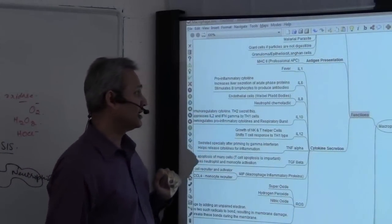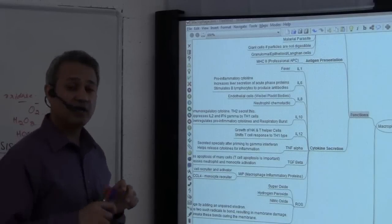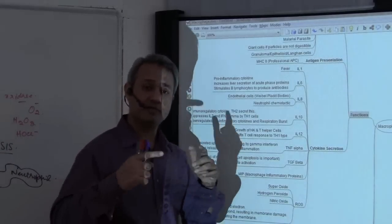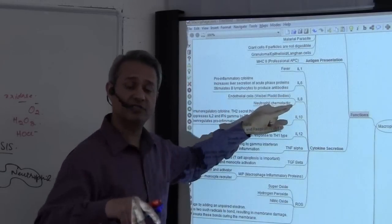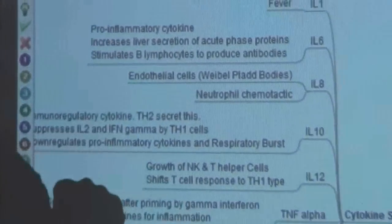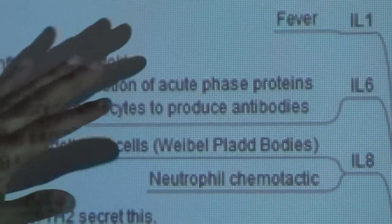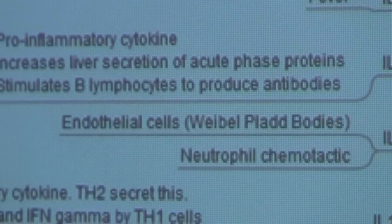Similarly, neutrophil chemotactic factor is also done by the IL-8. Now, one more thing. I think I mixed the IL-6 with the IL-8. IL-8 is the one which is the neutrophil chemotactic factor. IL-6 acts on the liver. It's a pro-inflammatory cytokine.